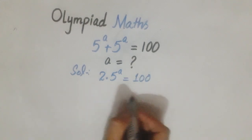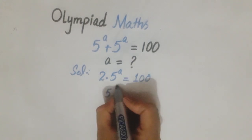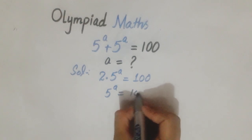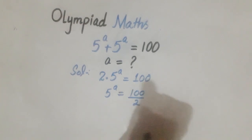Now 2 is multiplied here, so it will be divided on the other side. We get 5 raised to power a equals 100 divided by 2. When we divide, we get 5 raised to power a equals 50.